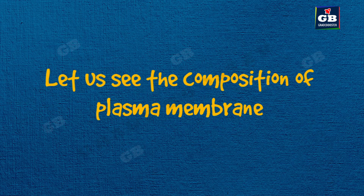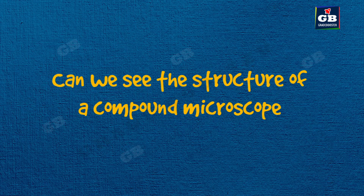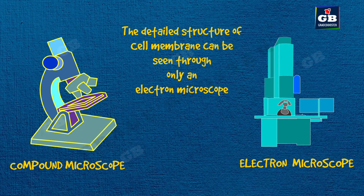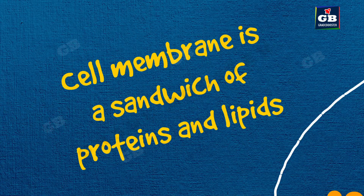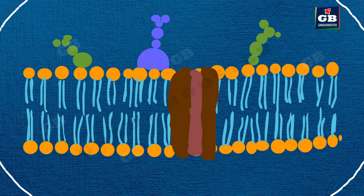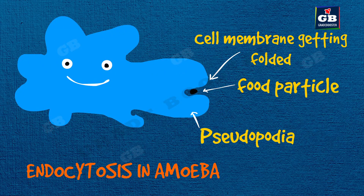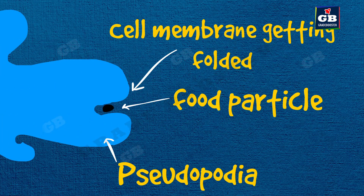The structure of the plasma membrane cannot be seen through a compound microscope — it can only be seen through an electron microscope. The plasma membrane is made up of carbon compounds like lipids and proteins. Organisms like amoeba engulf food materials through their cell membrane; this process is called endocytosis.